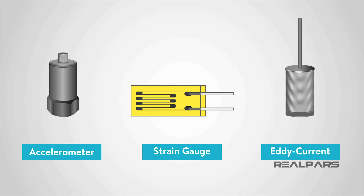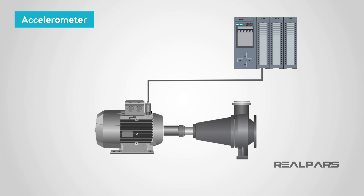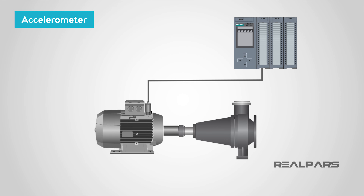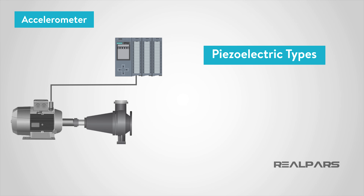Now that we know what vibration is, let's look at the different types of sensors to monitor vibration. First, we'll talk about an accelerometer. Accelerometers are devices that measure the vibration, or acceleration of motion, of a structure. They have a transducer that converts mechanical force caused by vibration, or a change in motion, into an electrical current using the piezoelectric effect. There are two types of piezoelectric accelerometers: high impedance and low impedance.